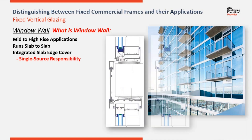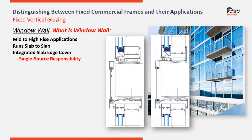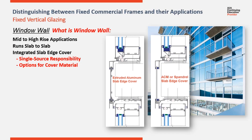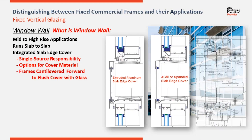Where window wall meets the slab, it has receptors at the head and the sill to receive an integrated slab edge cover. This design has many advantages. First, it puts all the building envelope into a single contract. The slab edge cover becomes the design feature, so there are options for finish and materials to be used. Frames can be cantilevered forward, placing the slab edge cover in the same plane as the glass, and providing space for a continuous line of insulation behind it.